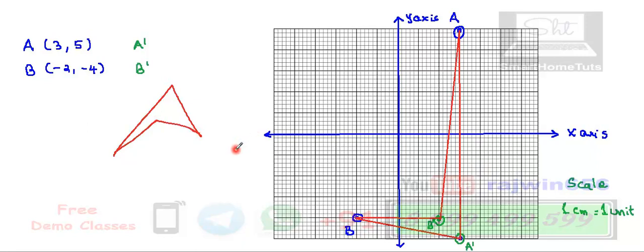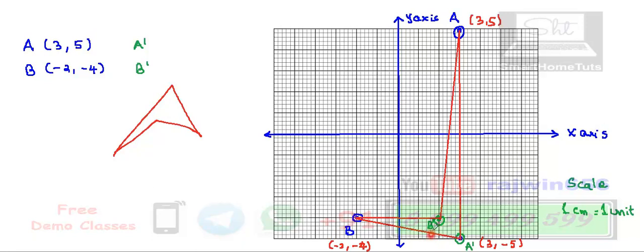I will also write down the coordinates of A, B, A dash, and B dash. A is 3, 5. The coordinates of point A dash are 3, minus 5, since it is reflected through the x-axis. Coordinates of point B are minus 2, minus 4. Coordinates of B dash, which is reflected through the y-axis, are 2, minus 4. You will write down all of these things, plot them on the graph paper, and send it to me.